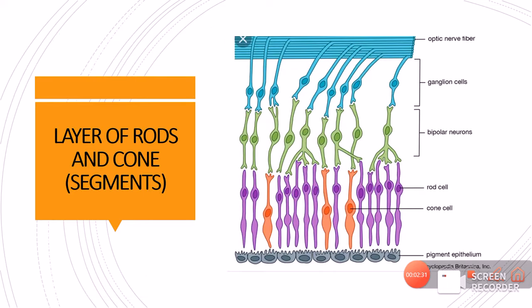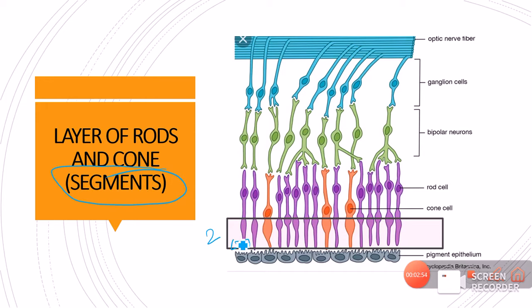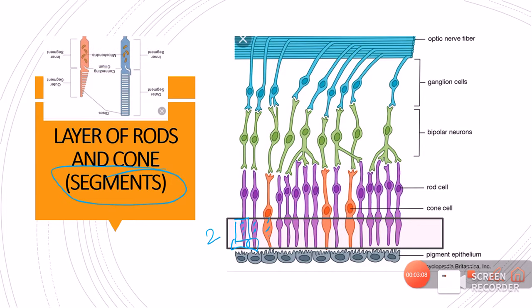The first layer was the RPE. The second layer of the retina, from outside to inside, is composed of only the segments of the rods and cones — the outer segment in contact with the RPE and the inner segment containing mitochondria. The nuclear part is not included in this second layer.